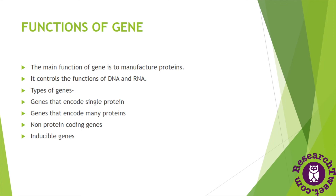Another function of the gene is to control the functions of DNA and RNA. DNA and RNA work as hereditary units. In eukaryotes, DNA is the hereditary material, but in some viruses and prokaryotes, RNA acts as the hereditary unit.